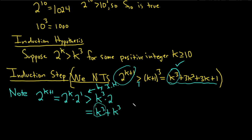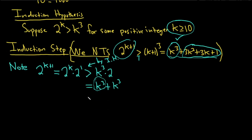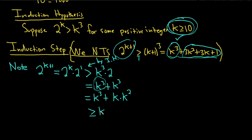There is no k cubed in the remaining expression — only k squareds. So let's write k cubed as k times k squared. We can do that because k to the 1 times k to the 2 is k cubed. Now we have a k squared, and we can use the condition that k is greater than or equal to 10. So this is greater than or equal to k cubed plus 10k squared, just replacing k with 10.